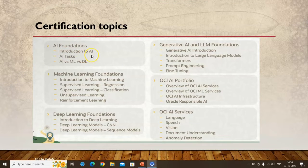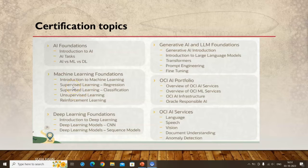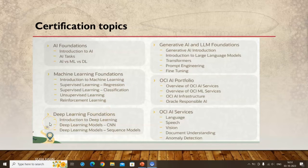Looking at the topic coverage: the course starts with an introduction to AI, then covers the relationship between AI, machine learning, and deep learning — since machine learning is a subset of AI and deep learning is a subset of machine learning. Machine learning foundations are discussed including supervised learning, regression, and classification. The course itself is free, so you can take it along with the certification.